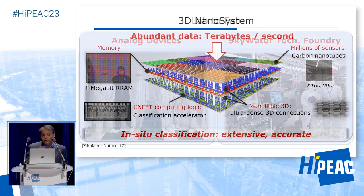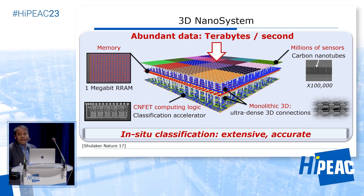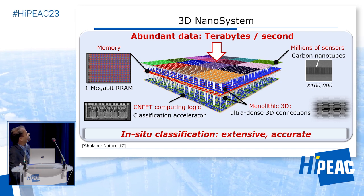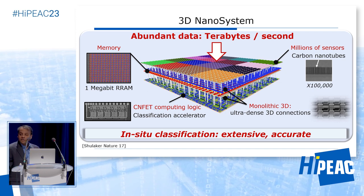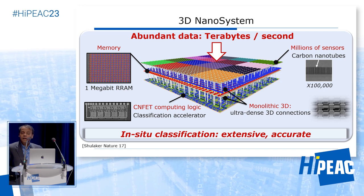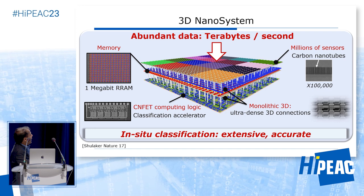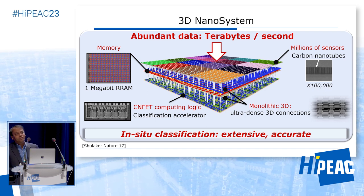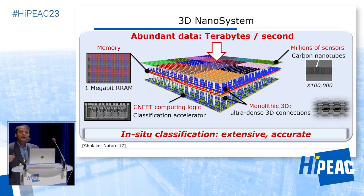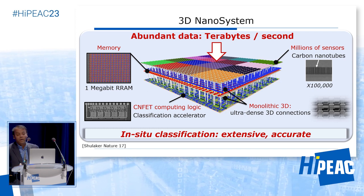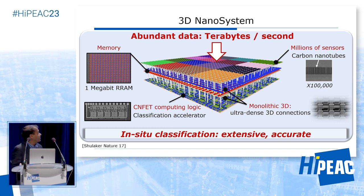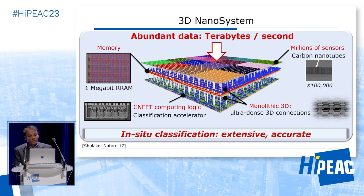Let's look at various hardware prototypes. In 2017 in Nature, this was the last chapter of Max Shulaker's thesis — we actually built a full 3D nanosystem, the first 3D nanosystem, with lots of carbon nanotube sensors sensing data from the external world at up to terabytes per second, storing it in on-chip memory, a megabit of resistive RAM built at the Stanford nanofabrication facility, and having a machine learning accelerator — a support vector machine accelerator — analyzing the data. This was an integration of carbon nanotubes for logic, carbon nanotubes for sensors, and resistive RAM together with silicon CMOS, sensing data, storing data, and analyzing data — the dream of so-called edge processing or IoT, showing in-situ classification of data.